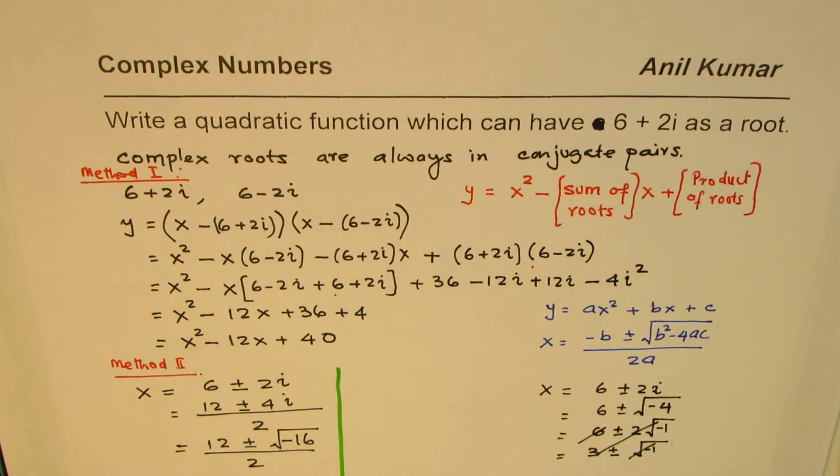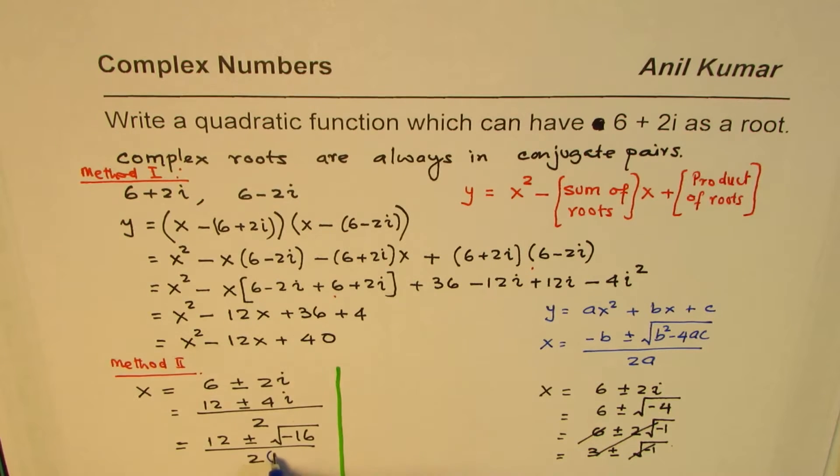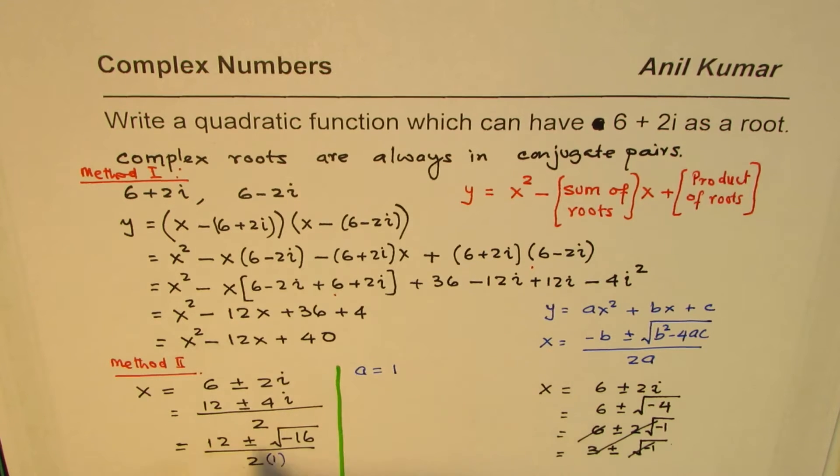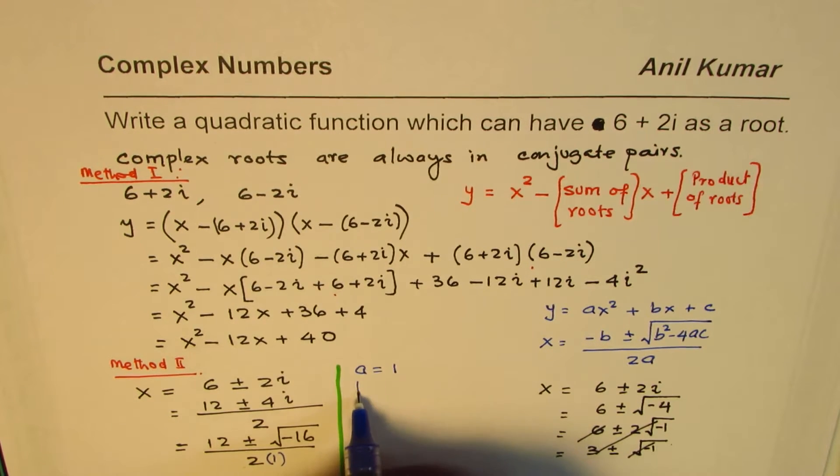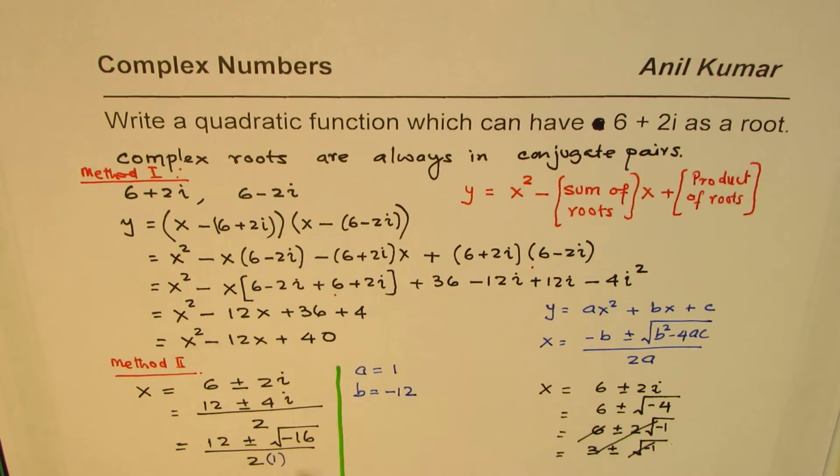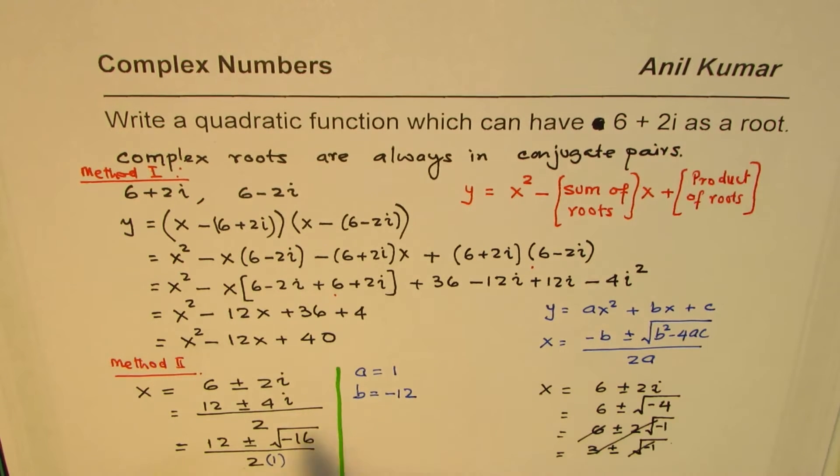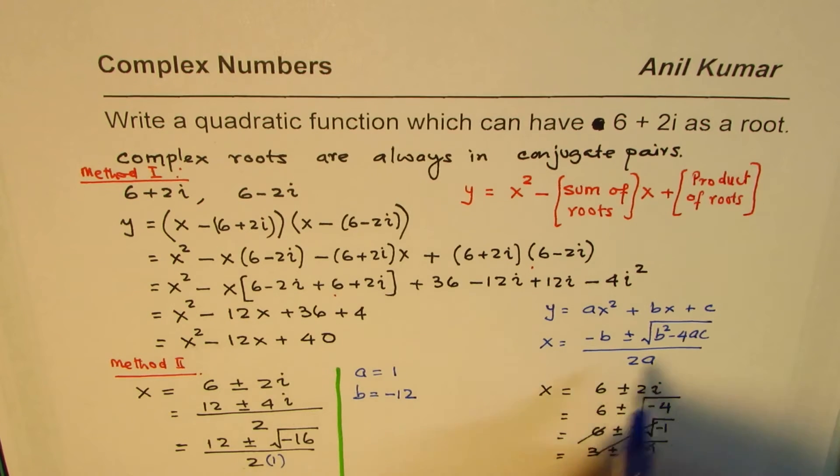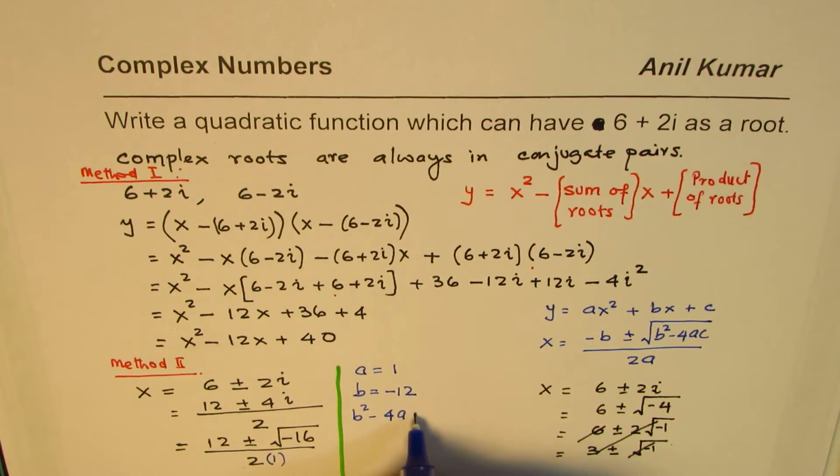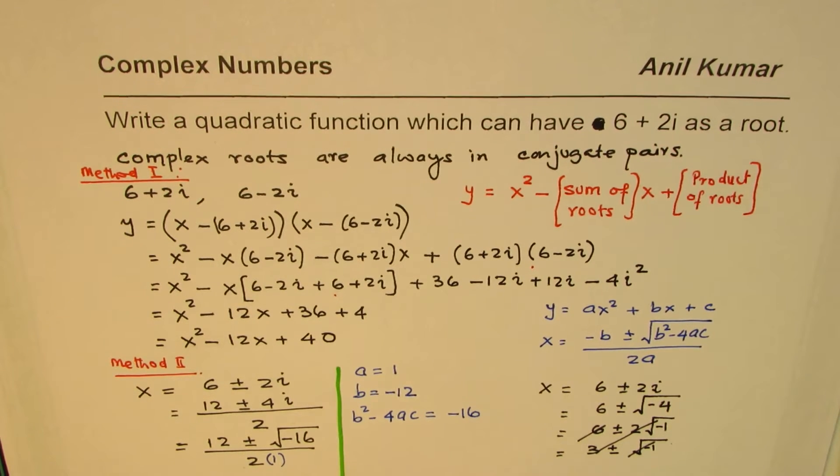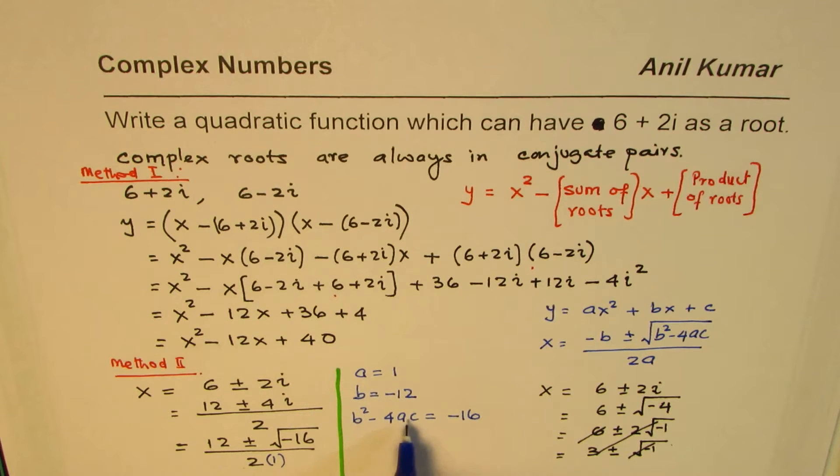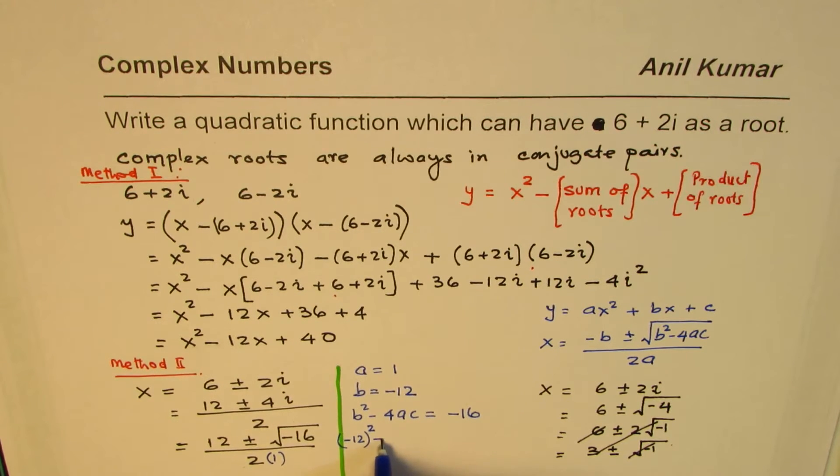Now, comparing, what can you say about a, b, and c? So, from here, you can say, a is 1, right? So, 2 times 1. So, we could write this as 2 times 1 as 2. So, we could say, a equals to 1. b is 12 with a minus sign. So, b equals to minus 12. Is it okay? Now, to find c, we know b square minus 4ac should be equal to whatever is within the square root. So, I am writing b square minus 4ac should be equal to minus 16. Since we know what b is, we can substitute the value of b. We know what a is, which is 1. We can find c.